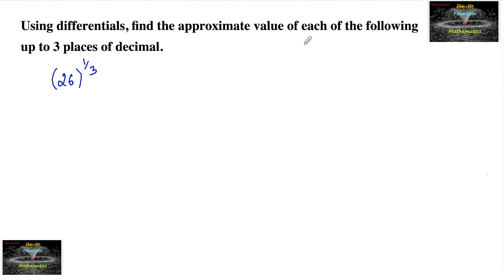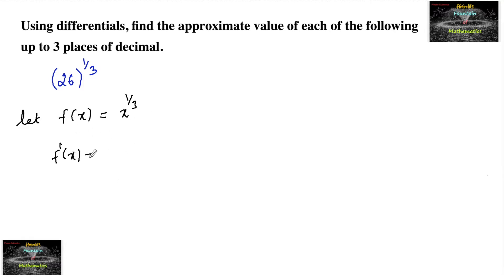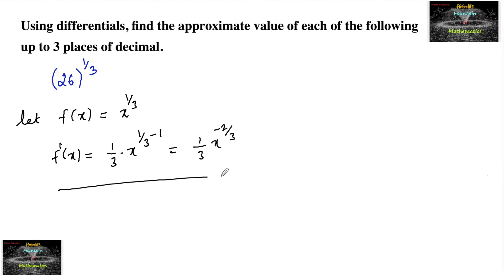Using differentials, find the approximate value of 26 to the power of 1/3 up to three decimal places. Let us consider f(x) = x^(1/3), since the given expression is in the form of x^(1/3). Let us find f'(x), which equals 1 upon 3 times x to the power of (1/3 - 1), that is 1 upon 3 times x to the power of -2/3.